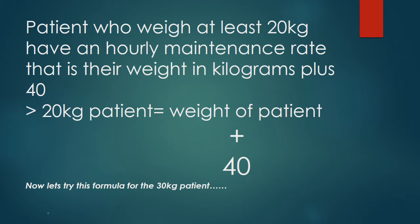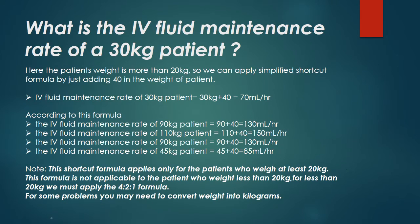For patients who weigh more than 20 kilograms: intravenous fluid maintenance rate equals weight of patient plus 40. Let's try this formula for a 30 kilogram patient. Since the patient's weight is more than 20 kilograms, we apply the simplified shortcut formula: 30 kg + 40 = 70 milliliters per hour. According to this formula, a 90 kilogram patient equals 90 + 40 = 130 milliliters per hour.